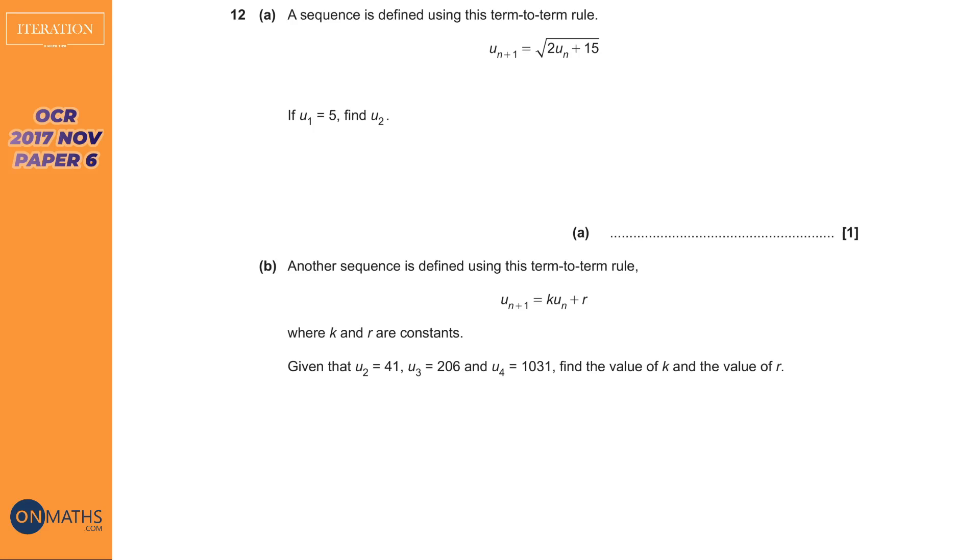So here we've got an OCR one which is really focused on the sequences so we're not using the iterative formulas to find a solution. We're given this kind of weird thing here and we're told what it equals. What this thing is, is the next term in the sequence. U with the subscript n plus 1 just means the next one in the sequence and U with the subscript n is the current one in the sequence.